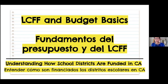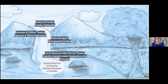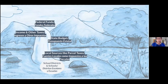We'll do a quick basics overview on the budget. The money that school districts get comes from a variety of places that feed the pond — the funding that our schools and districts rely on. There are the federal funds.